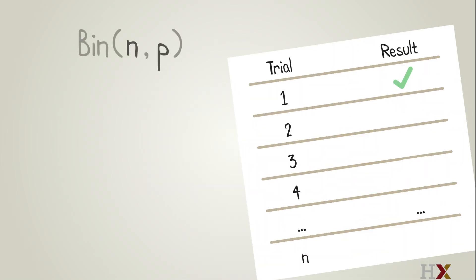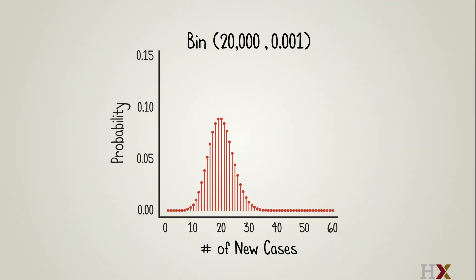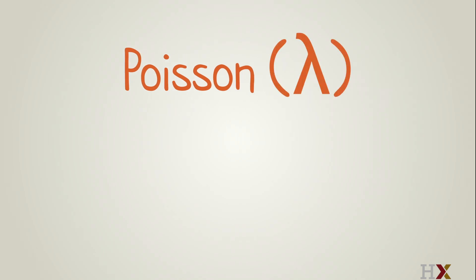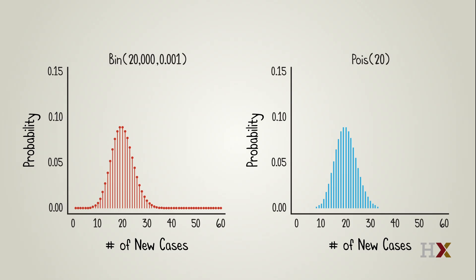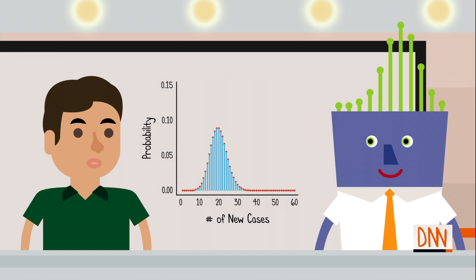In general, the Binomial(n, p) distribution counts the number of successes in n independent trials, each of which has probability p of success. If we have a Binomial(n, p) distribution where p is small, it turns out that we can approximate it well with a beautiful distribution known as the Poisson. The Poisson has one parameter, usually called lambda. The probability of a Poisson(lambda) random variable equaling k is e to the minus lambda, times lambda to the k, over k factorial, for any non-negative integer k. For the problem at hand — or should I say at hair — we can use Poisson(20) as a good approximation to Binomial(20,000, 0.001). That looks very pretty, like a bell-shaped curve.